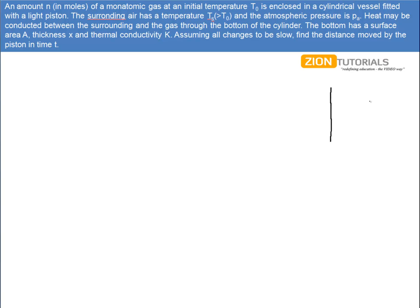Let's say this is my cylinder and this is my base. The base has a cross-sectional area A and thickness X. Heat can come out or come in through the base. This is my piston. Let's say it moves a distance L downward, which we have to calculate.